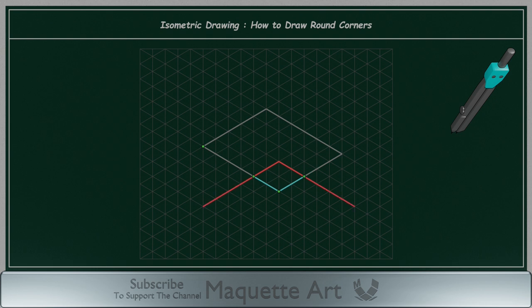Now imagine drawing a round corner like before, at those two red lines. We will draw the perpendicular lines, then draw the arc.